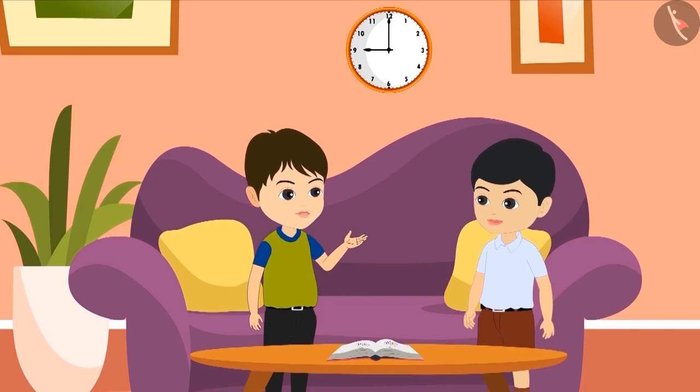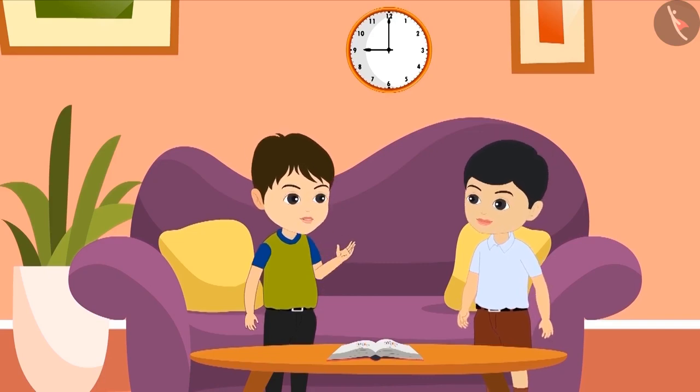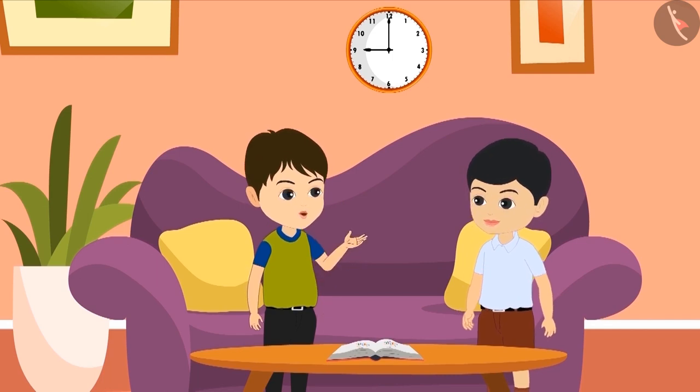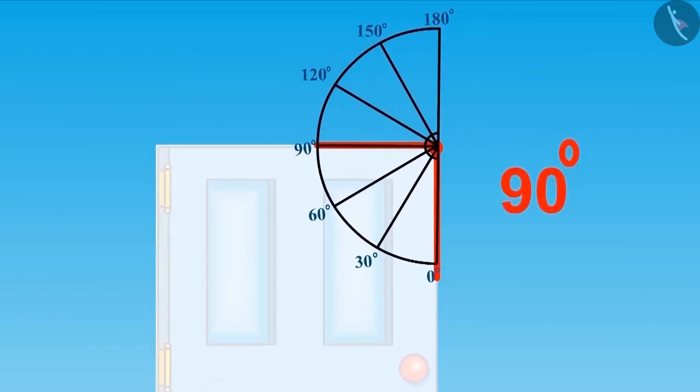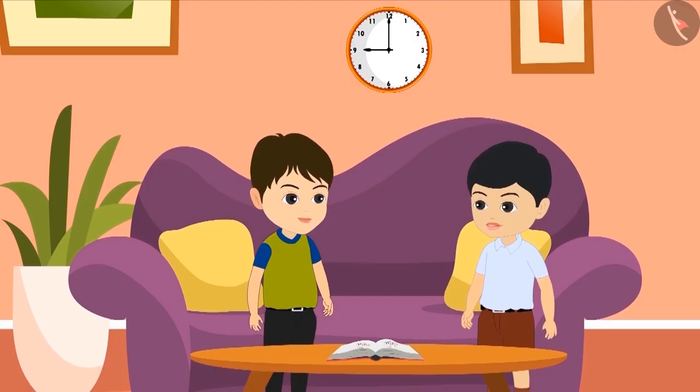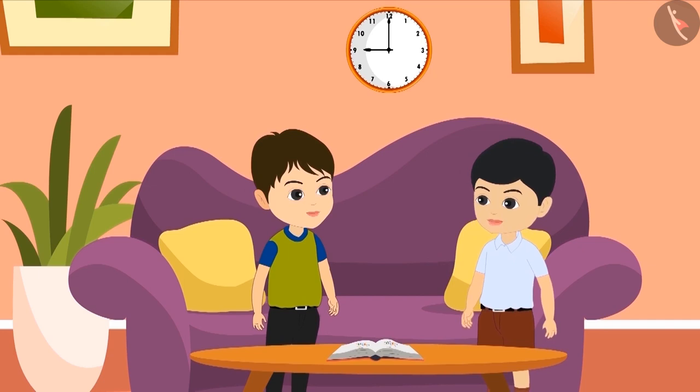It looks like a right angle, so its measurement should be 90 degrees. Let us calculate it correctly with the help of a protractor. Oh yeah, this is an angle of 90 degrees. Wow, you were absolutely correct!